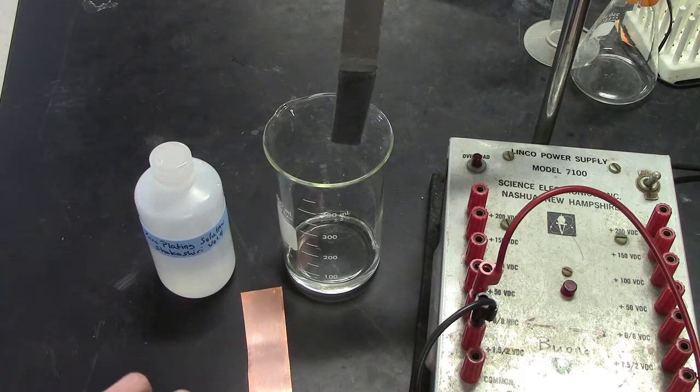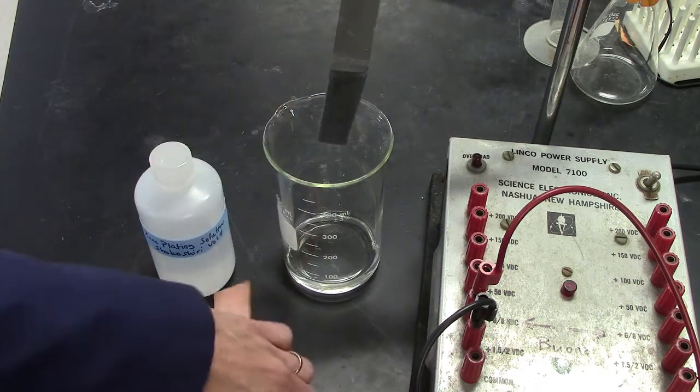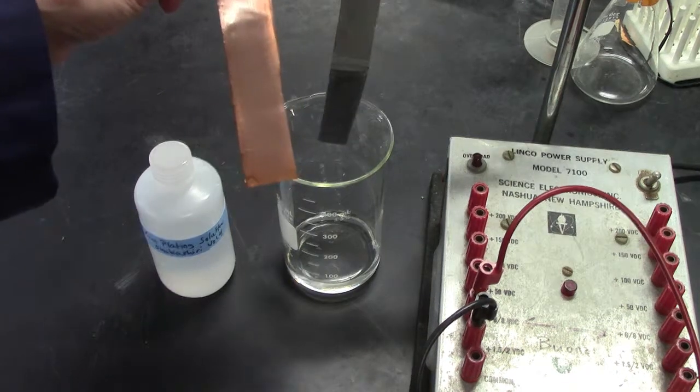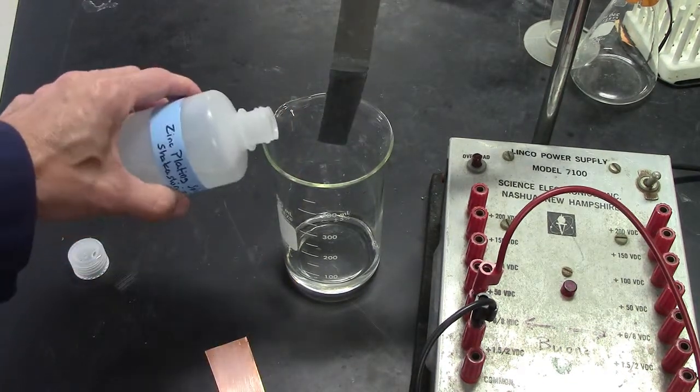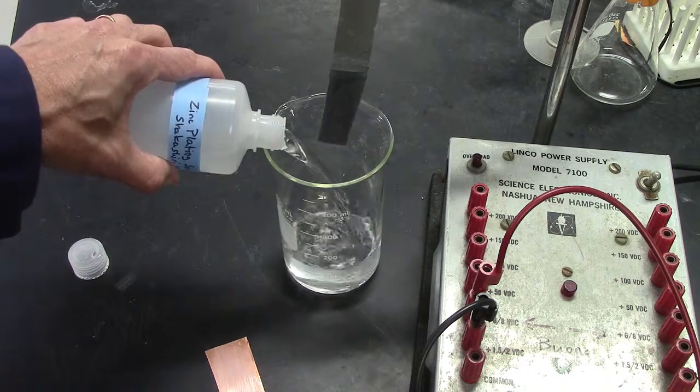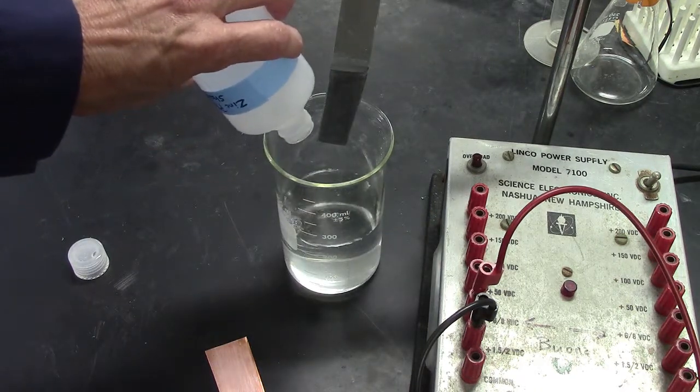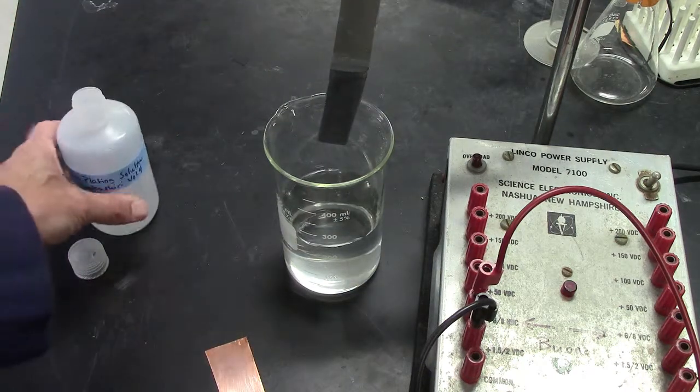I need what are called two electrodes. One will be copper and one will be zinc. I'm pouring the solution that has zinc sulfate into my beaker. You can see it's colorless.